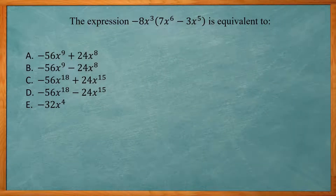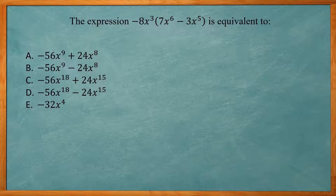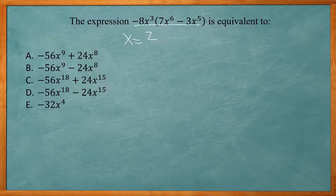This one says the expression negative 8x to the third power times the quantity 7x to the sixth power minus 3x to the fifth power is equivalent to. So for this one, I'm just going to choose x equals 2, and I'm going to see what that gives me for this expression.